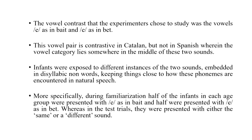The vowel contrast the experimenters chose to study was the contrast between the vowel in 'bet' (open-mid) and the vowel in 'bait' (close-mid). This vowel pair is contrastive in Catalan — these are actually different phonemic categories in Catalan — but not really in Spanish. In Spanish they instantiate the same vowel category and are not distinguished. So for Spanish adults these two will sound the same, whereas for Catalan adults these two will be slightly different sounds.